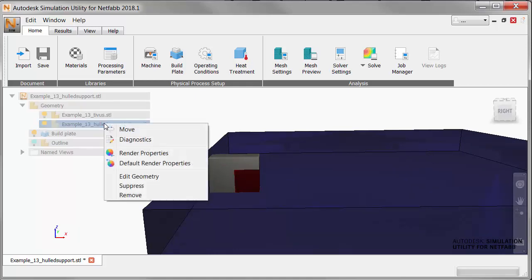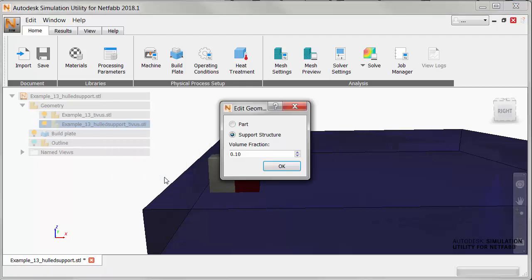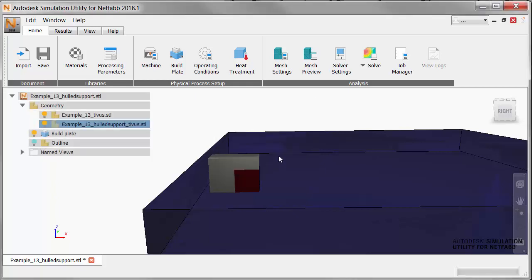If we go to the browser, right-click on the support, and select Edit Geometry, we can see that the volume fraction here is 0.1, which indicates that the system has determined that the original lattice contained only 10% solid material in the total volume, and it applied the same fraction to the homogenized support structure.